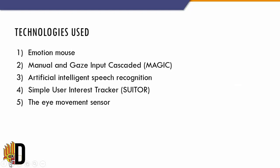Now let's look at the technologies used in Blue Eyes Technology. These include: Emotion Mouse, Manual and Gaze Input Cascaded — known as MAGIC — Artificial Intelligent Speech Recognition, Simple User Interest Tracker — known as SUITOR — and the Eye Movement Sensor.